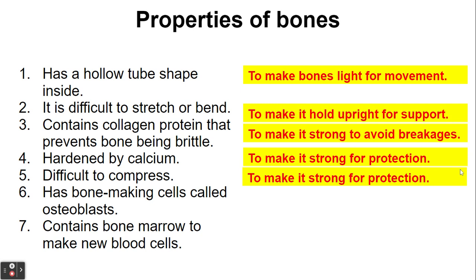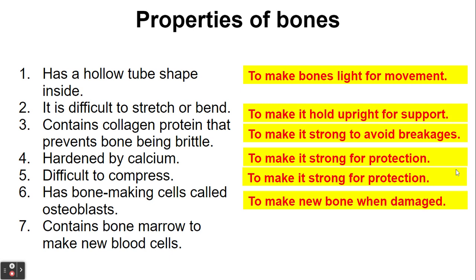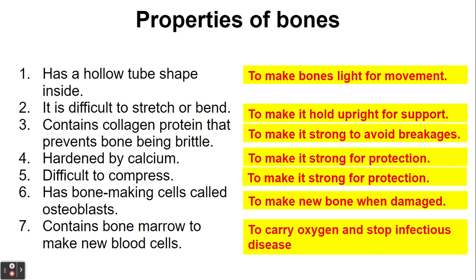Bone also has cells called osteoblasts that can make new bone when bone is damaged. Some people think that bone is not living, but that's incorrect — bone is living. It's able to grow and repair itself if you fracture it, and it's these special cells called osteoblasts that do that. Lastly, and really importantly, bone also contains, within that hollow space, something called bone marrow, and that makes new blood cells.